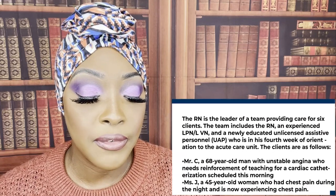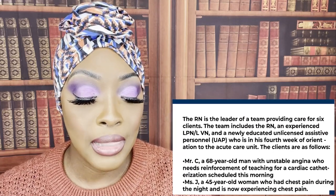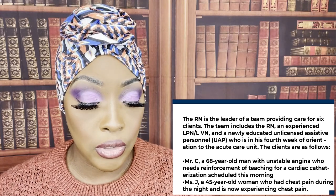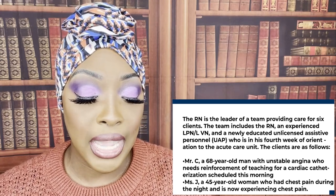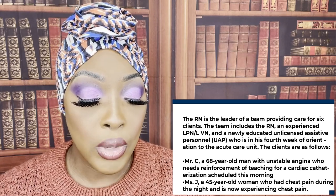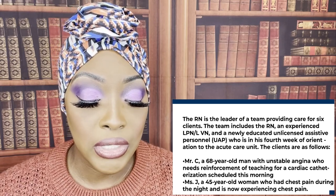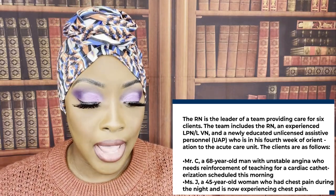Alright guys, let's get started. Since it's part two, I'm going to re-review the instructions and the clinical situation so you have an idea of what's going on. The registered nurse is the leader of a team providing care for six clients. The team includes the RN, an experienced LPN/LVN, and a newly educated unlicensed assistive personnel who is in his fourth week of orientation to the acute care unit.